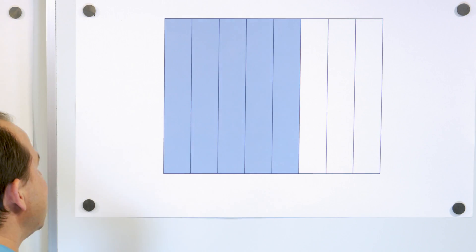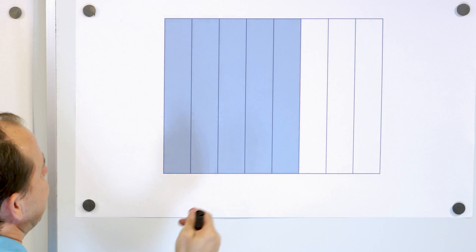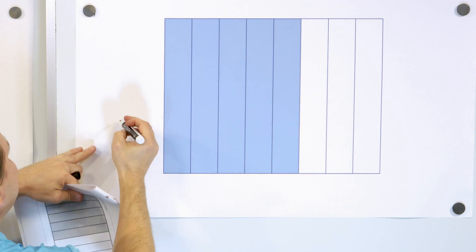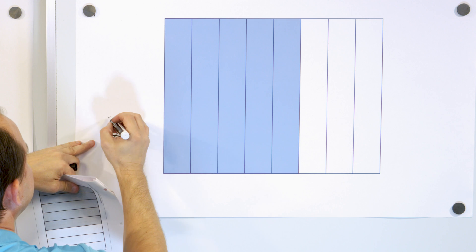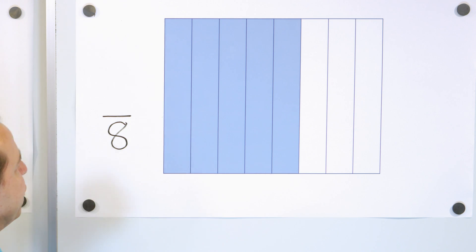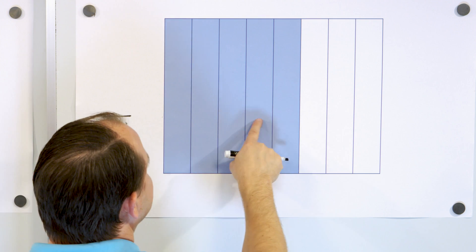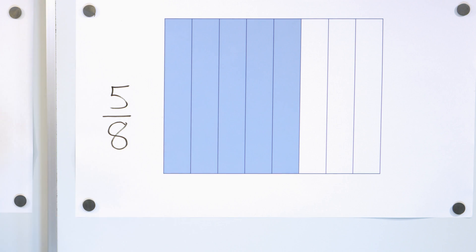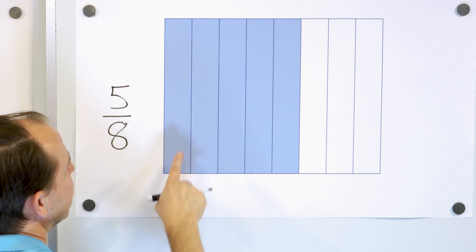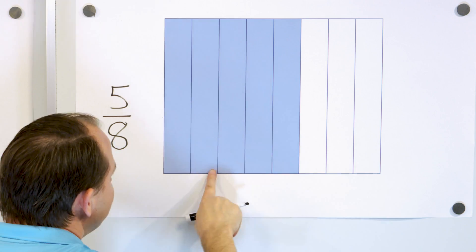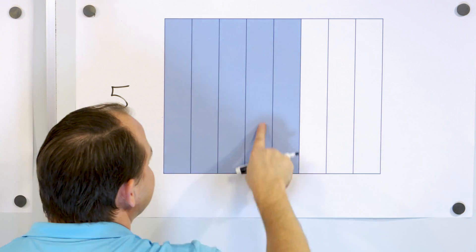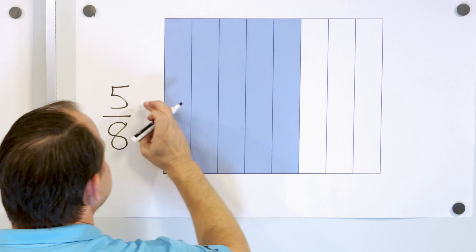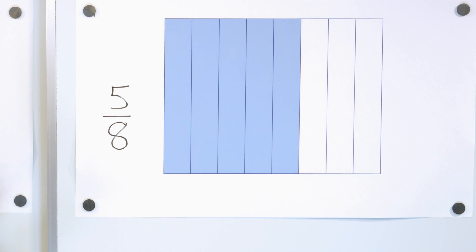For our next object, what fraction do we have? One, two, three, four, five, six, seven, eight pieces — we cut this into eight pieces, so let's put eight on the bottom. How many do we actually have? One, two, three, four, five — so the fraction here is five out of eight, also called five eighths. This is one eighth, two eighths, three eighths, four eighths, five eighths — all of this is five out of eight pieces.